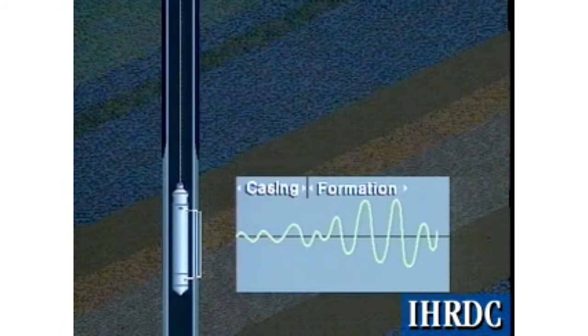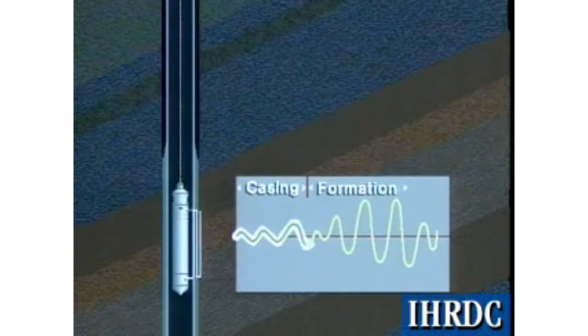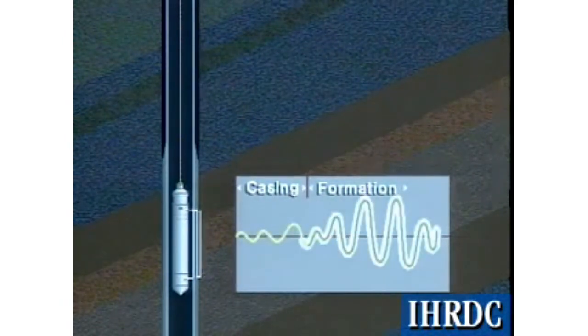The effect of a good cement job on the received signal, therefore, is to cause the pipe portion of the signal to be weak, while the formation portion is strong.